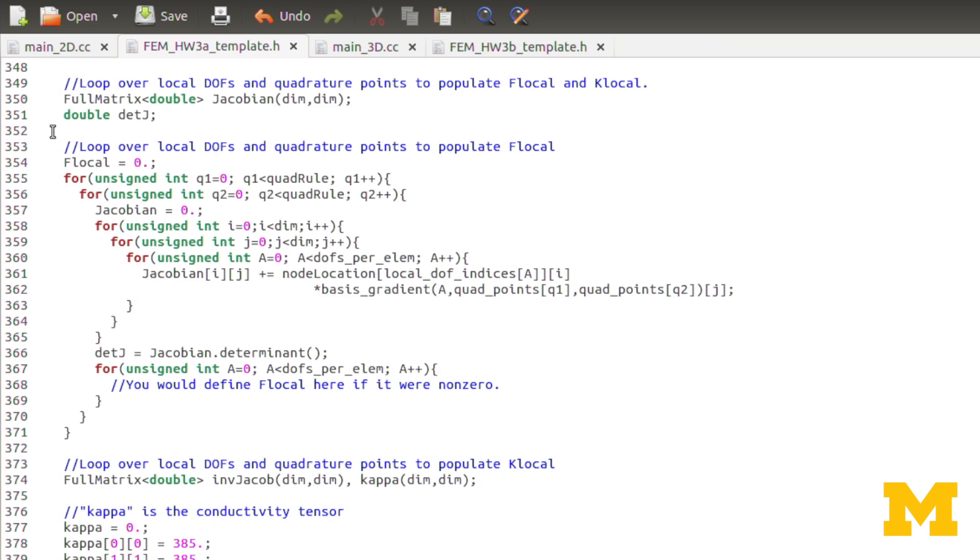The Jacobian you can see is of dimension dim by dim, or in this case, the 2 by 2 matrix. It's the Jacobian for the mapping between the real domain and the bi-unit domain. Remember in the 1D case, we actually did have this Jacobian, but it was just a 1 by 1 matrix. Essentially, it was HE over 2. And so that showed up there. In this case, we have to create the matrix itself.